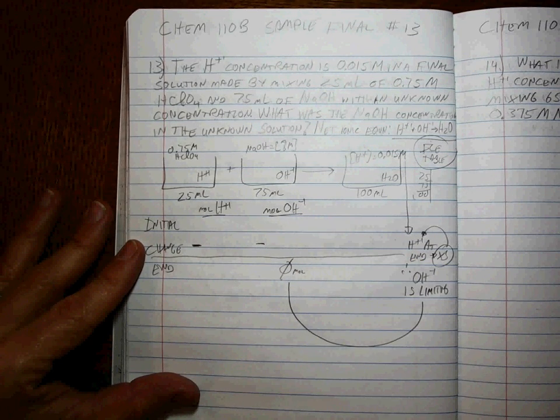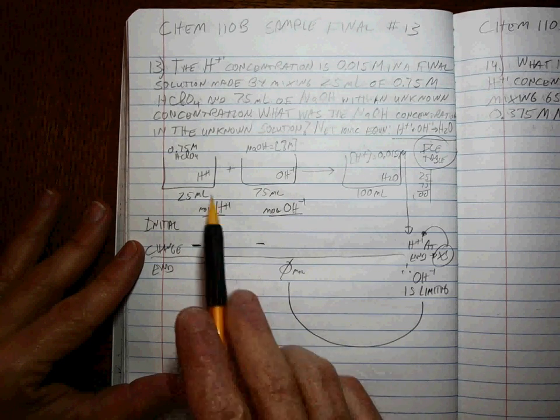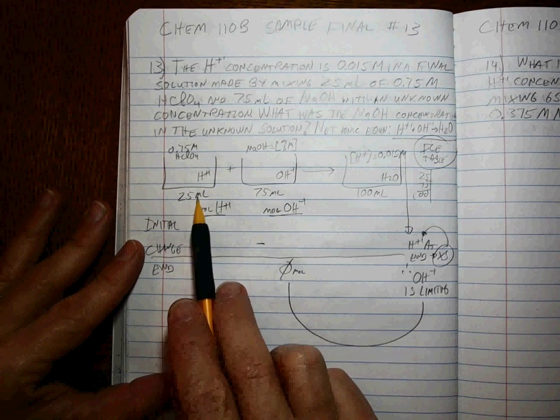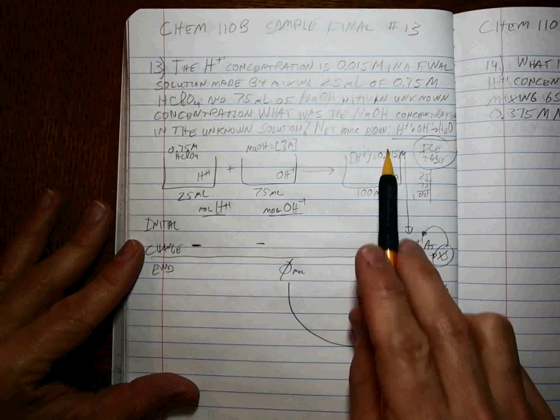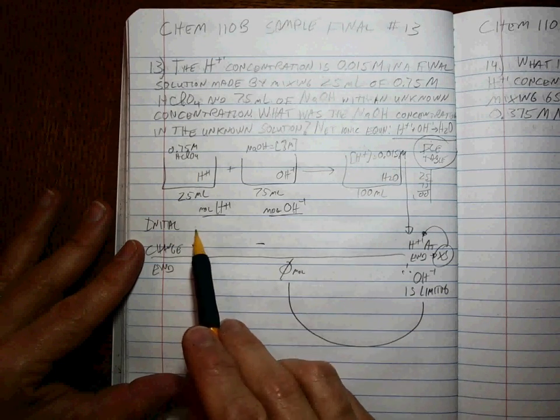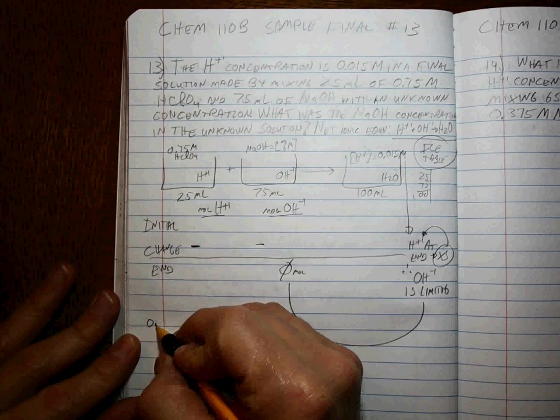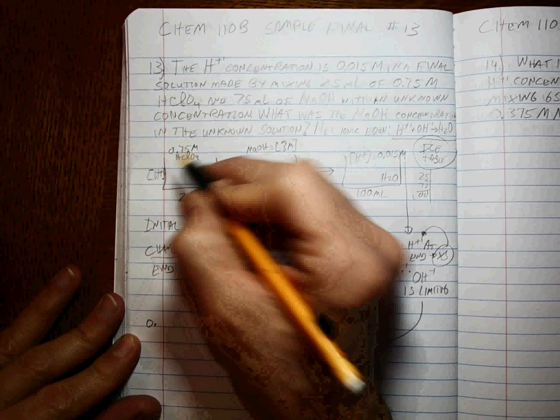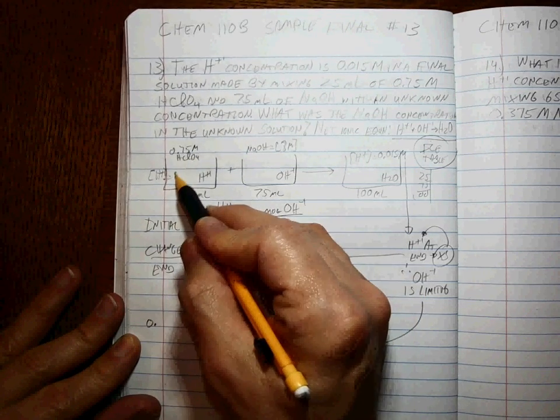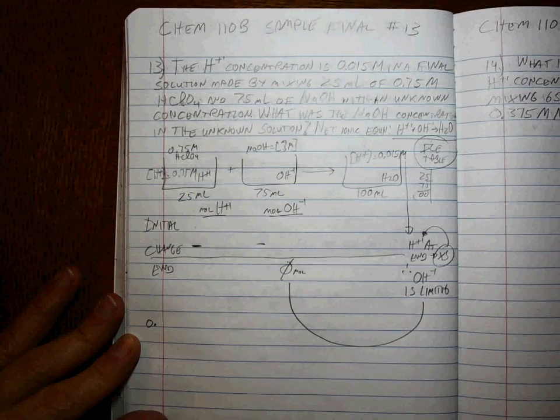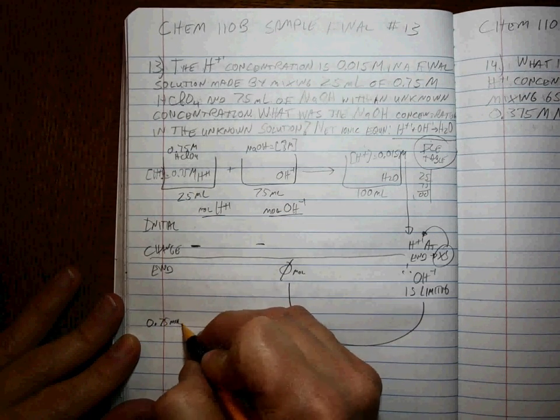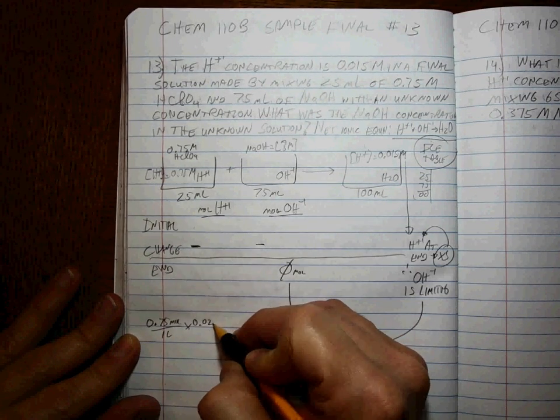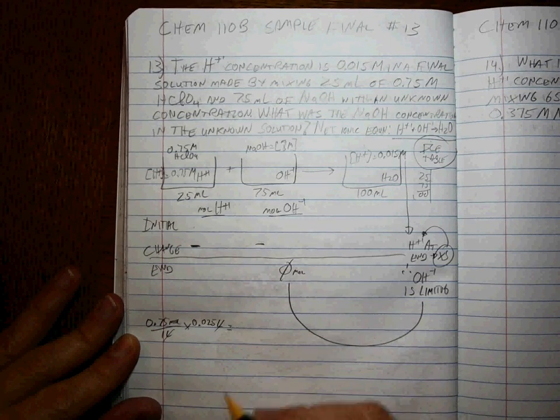Remember, every time you have concentration in moles per liter and a volume in liters, you're going to calculate the moles. First, HClO4 splits up into H+ and ClO4-, so the H+ is 0.75 moles per liter times 0.025 liters.